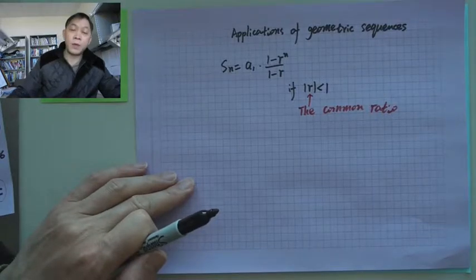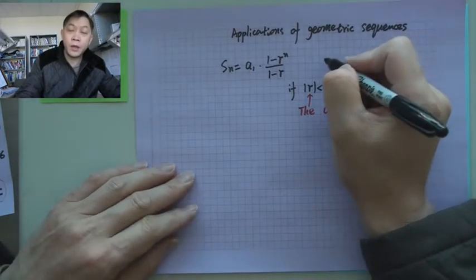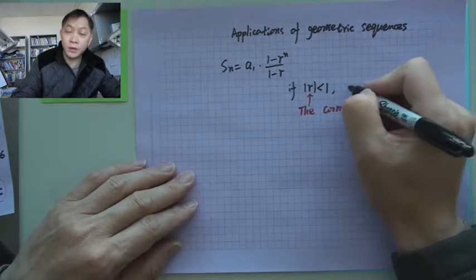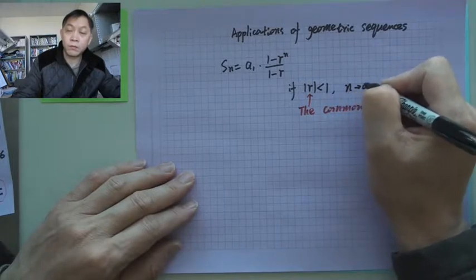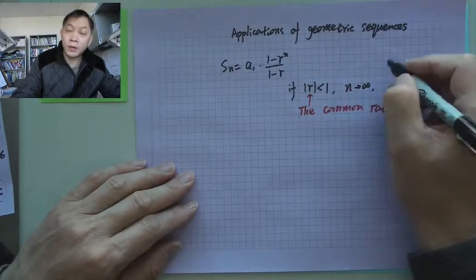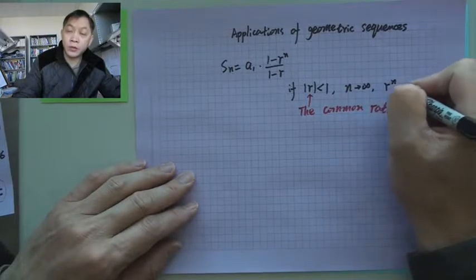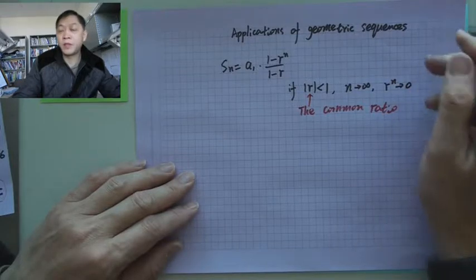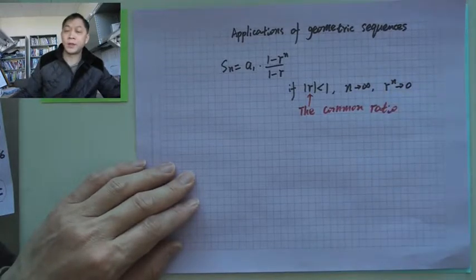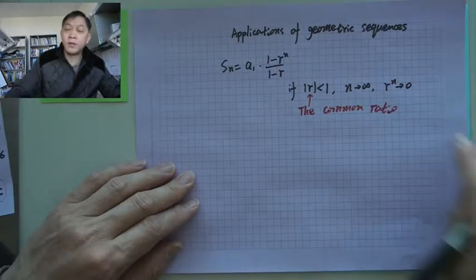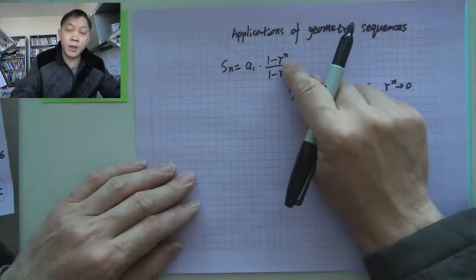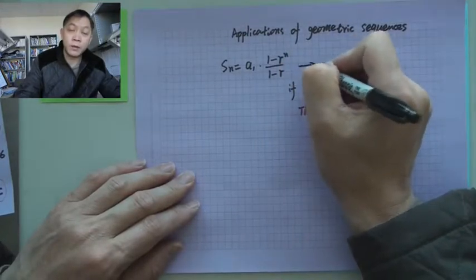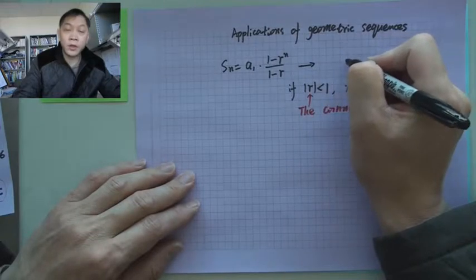If it's less than 1, then when n goes to infinity, we have a₁r to the n goes to 0, because previously we have seen how this works. If r goes to 0, then this r to the n goes to 0, and we then have a sum.